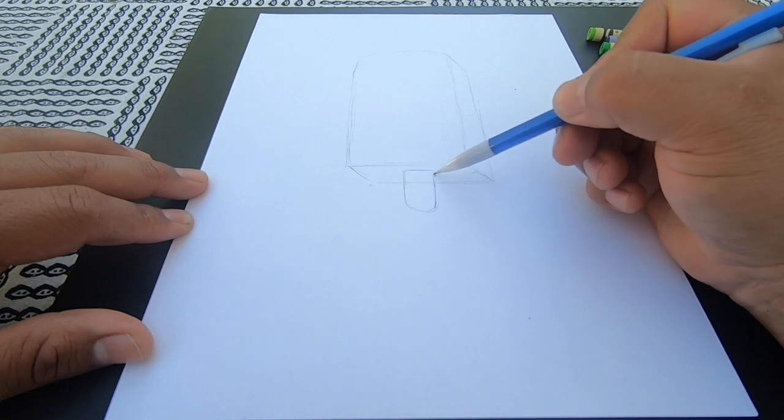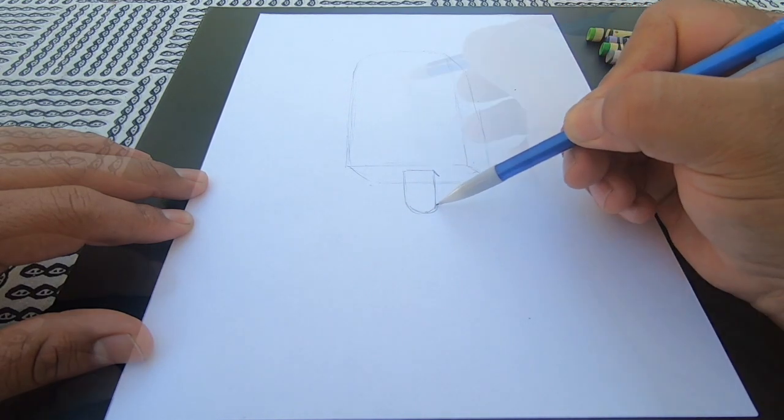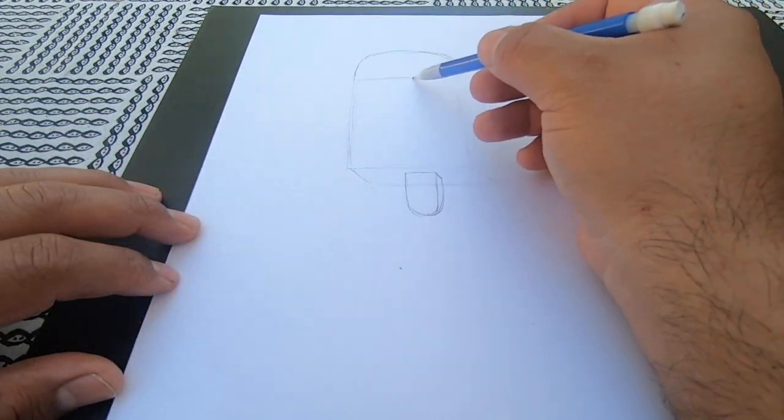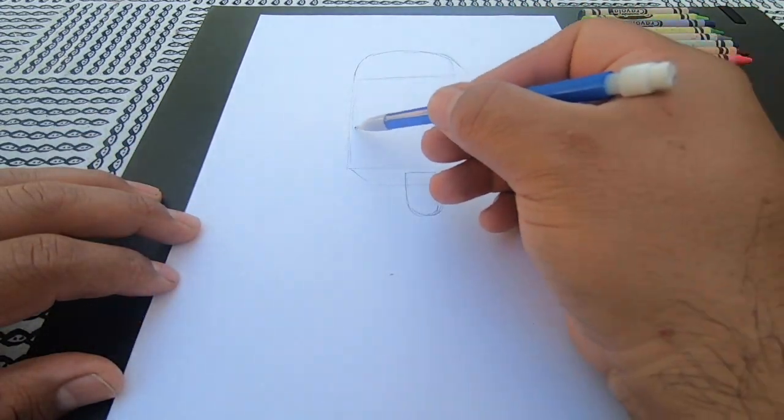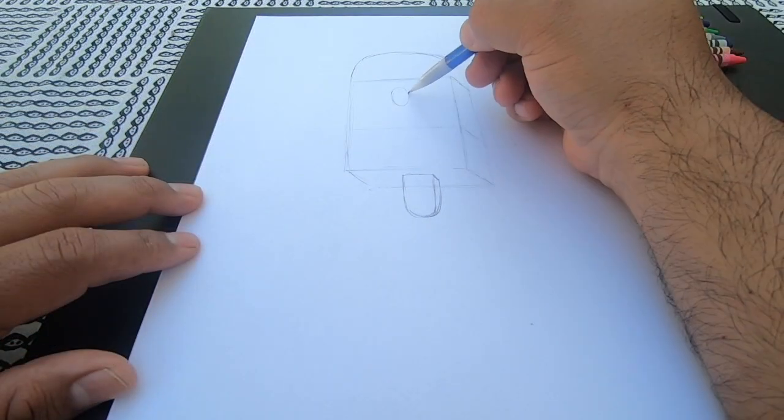I'm going to start my drawing by using a pencil. It's important to stay loose when starting your drawing and remember that things don't need to be perfect. You're just sketching it out at the moment so things can change.